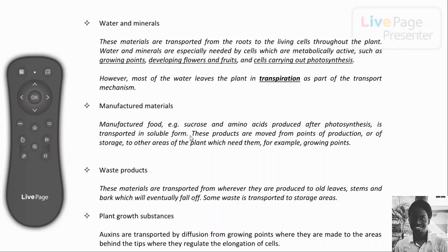Manufactured materials like sucrose and amino acids, produced after photosynthesis, are transported in soluble form from sites of production and storage to areas in the plant where they are needed for growth and development. All biological systems, like machines, produce waste substances that need to be removed. Waste materials in plants are transported to leaves, stems, and bark where they are stored and eventually gotten rid of — these include things like gum, oils, latex, and resins.